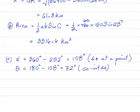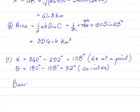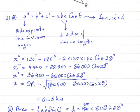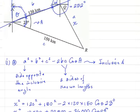Now that I have that, I can state what is the bearing of R from P. The bearing of R from P is equal to 72 plus 23, and this is equal to 095 degrees. So the bearing of R from P, represented by that entire angle, is 095 degrees.